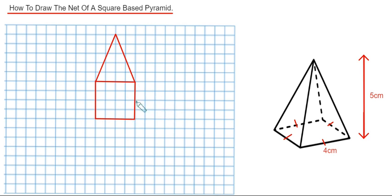And if we do the same thing for the three other sides of the square. So if we go out 5 centimetres, which is there, and then join it up.